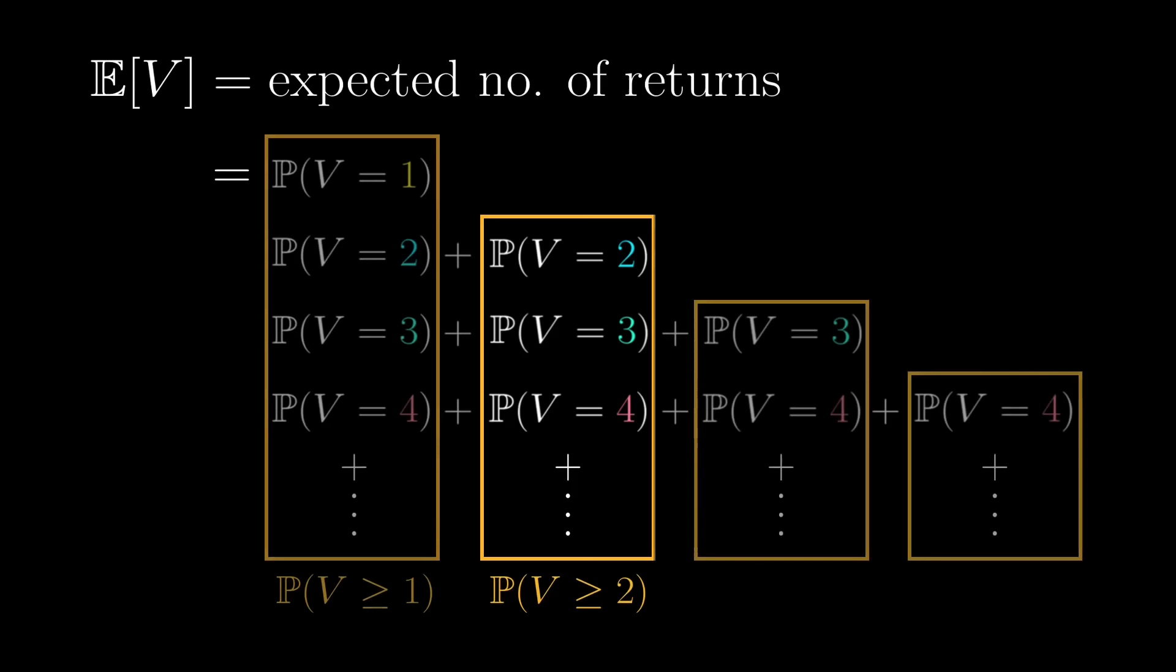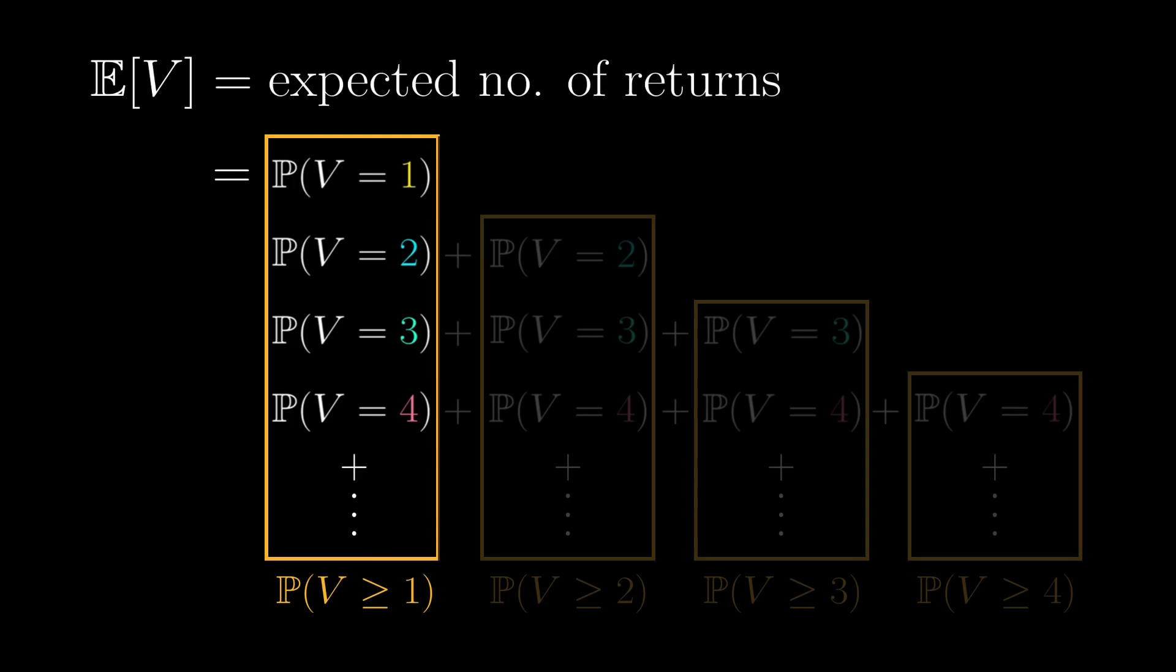The reason this method is useful is that if V is at least 1, that exactly means you'll return to the origin at some point, and so this is actually the return probability. And for simplicity, we denote it as r.